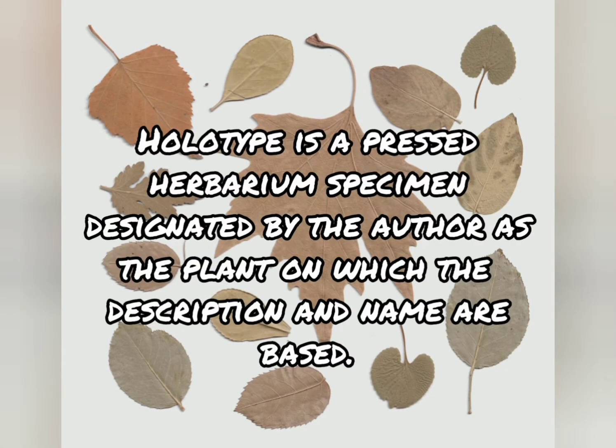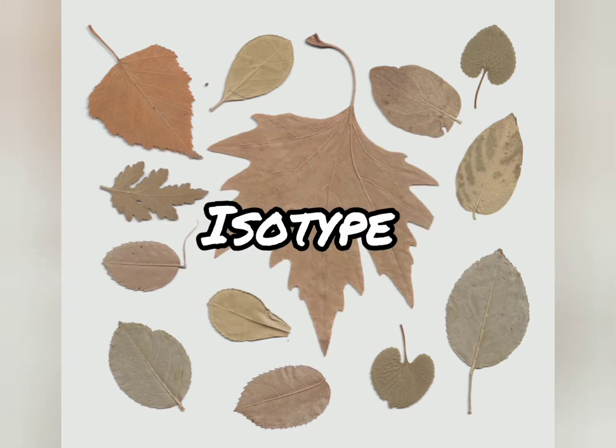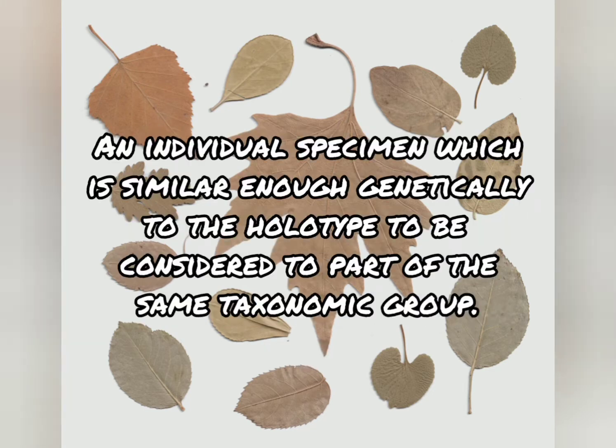In botanical nomenclature: Holotype is a pressed herbarium specimen designated by the author as the plant on which the description and name are based. An isotype is an individual specimen which is similar enough genetically to the holotype to be considered part of the same taxonomic group.